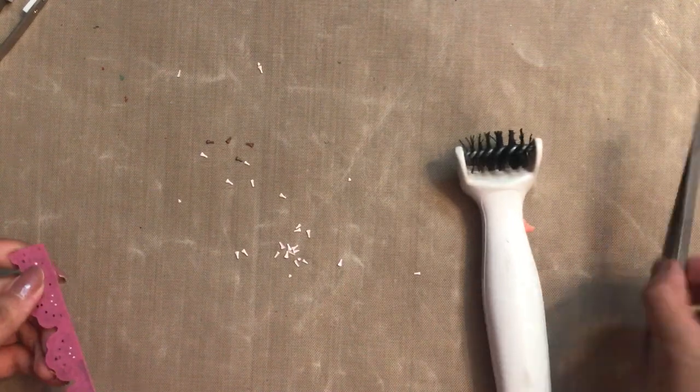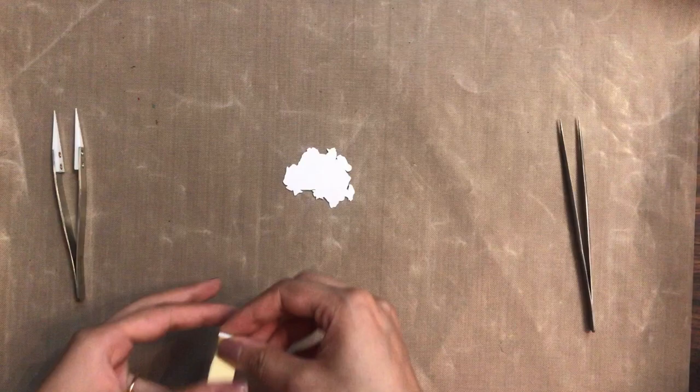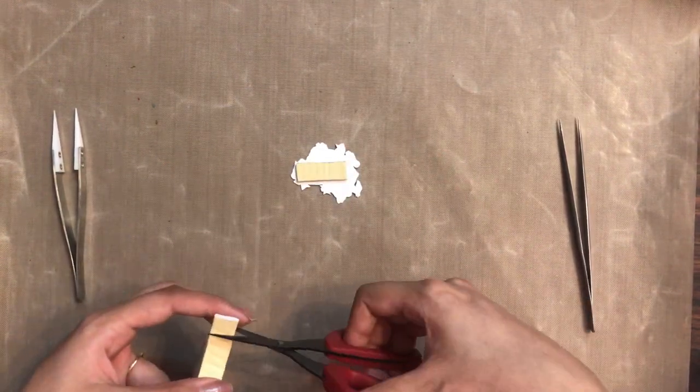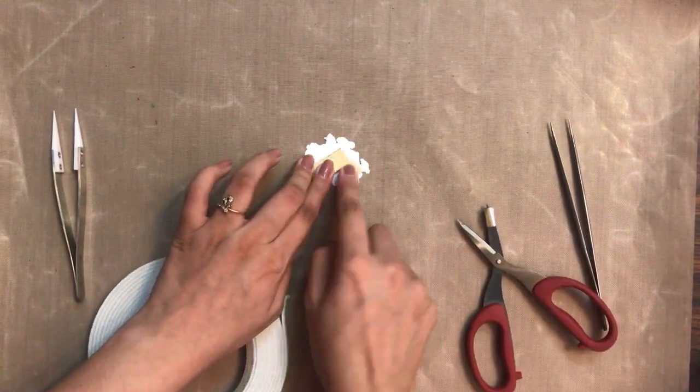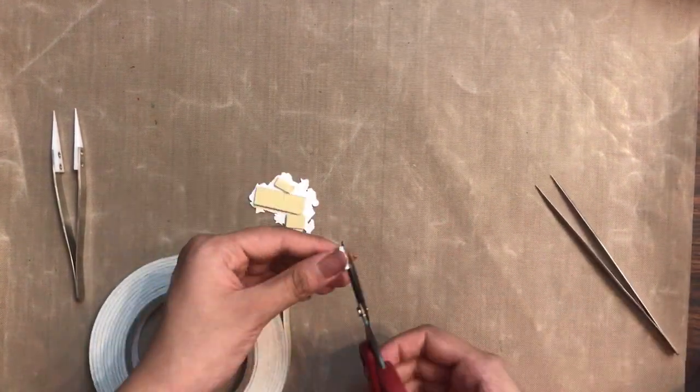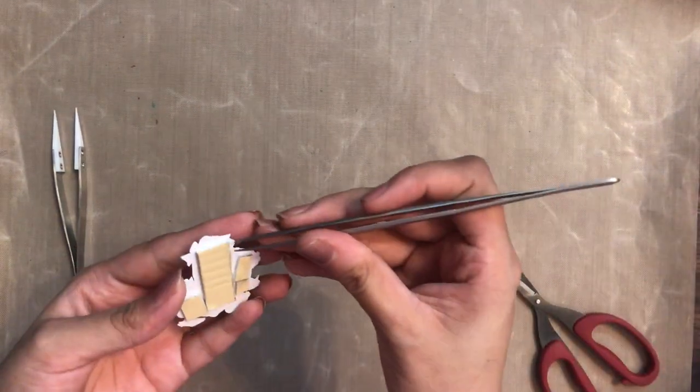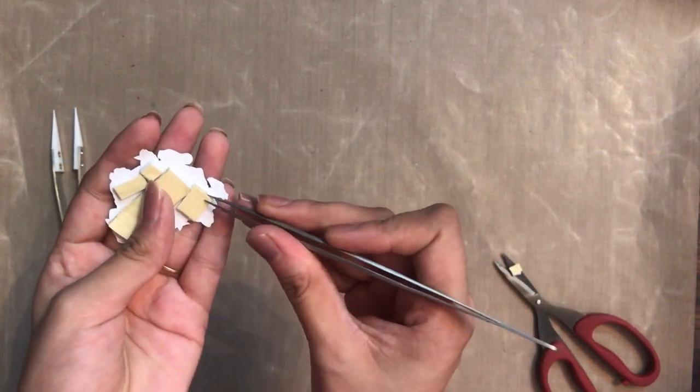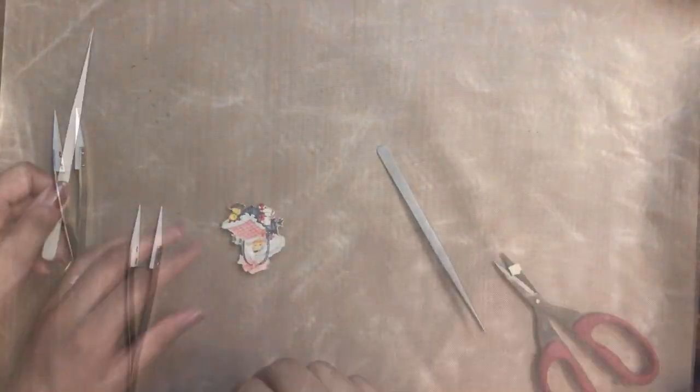Now let's move on to another usage of the fine tip tweezers. Here I'm adding 3D foam tape to my motif. When you use these 3D foam tapes, you have that excess backing. Using the tweezers, you can simply peel off that backing very easily like this. The fine tip tweezer is just amazing.